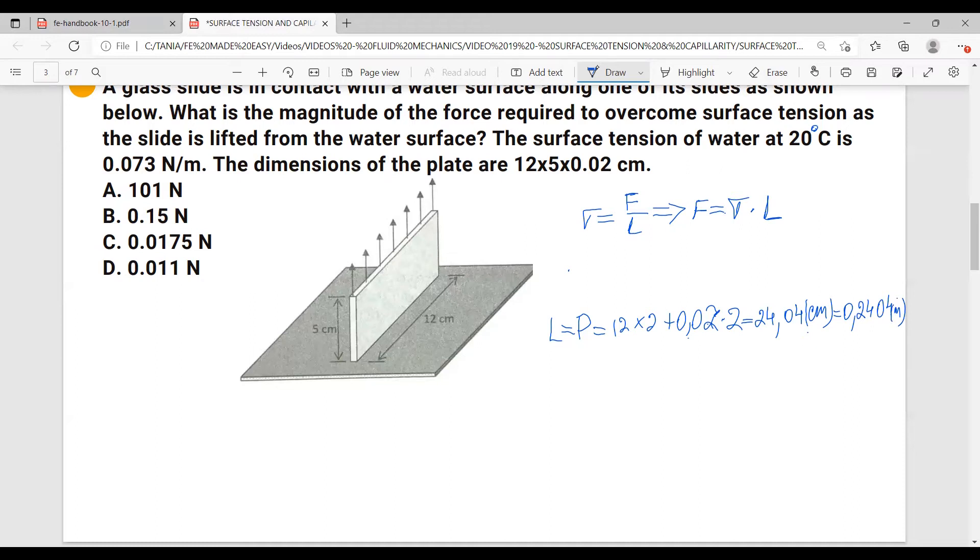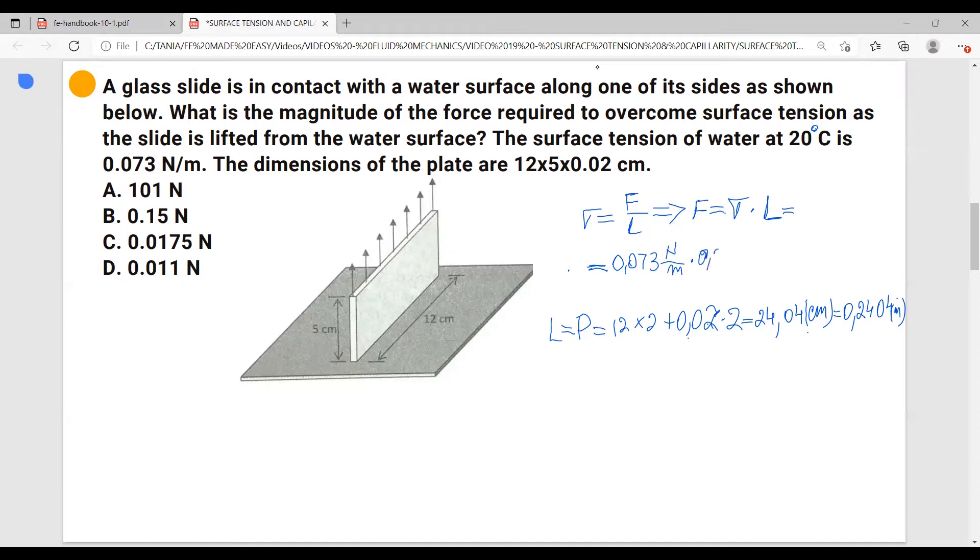Let's transform this into meters, that's going to be 0.2404 meters. And now let's go back here and calculate the force. It's going to be 0.073 newtons over meter times our perimeter which is 0.2404 meters, equals to 0.0175 newtons. And the answer is C.